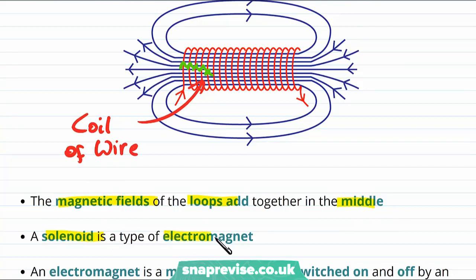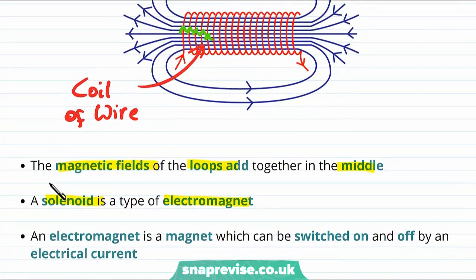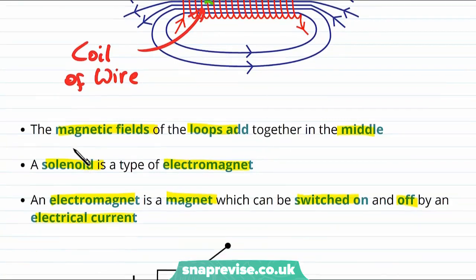We call a solenoid an electromagnet. So what is an electromagnet? Well an electromagnet is a magnet which can be switched on and off by an electrical current.